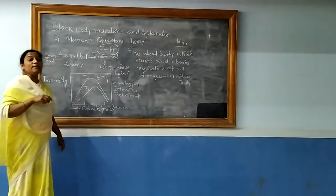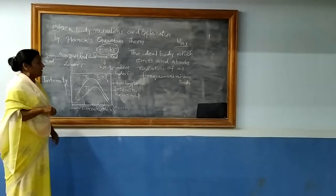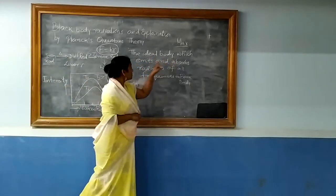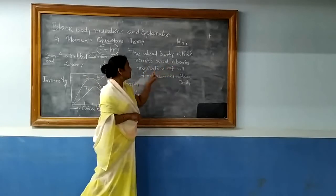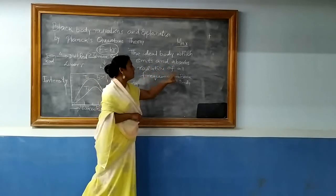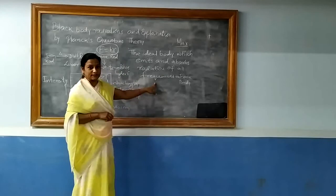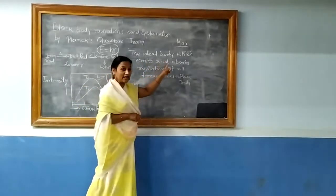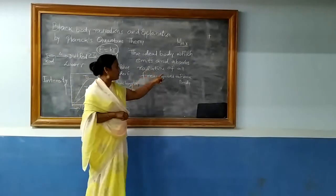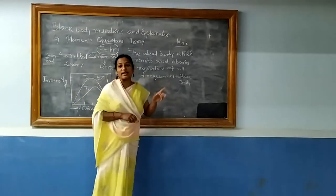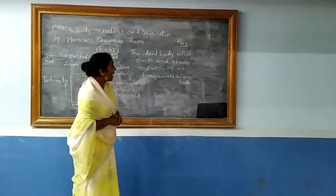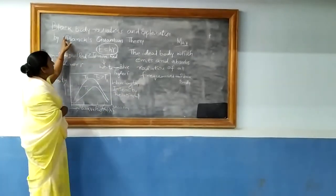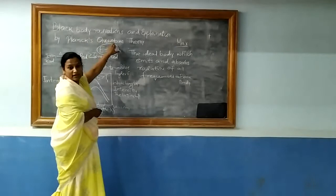So how do you define a black body? A black body is the ideal body which emits and absorbs radiations of all frequencies. The radiations emitted by a black body are called black body radiations.